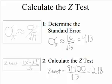The first step for calculating the z-test is to figure out the standard error. The standard error is approximately equal to the standard deviation divided by the square root of the sample size. Our standard deviation is 16 and our sample size is 15, so we get 16 divided by the square root of 15, which comes out to be 4.13. This tells us the variability for sample means is a lot less than for individual scores — individual scores have a standard deviation of 16, but for a sample size of 15, the standard error is 4.13.